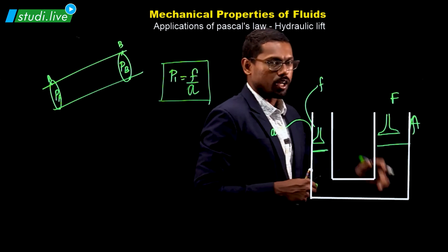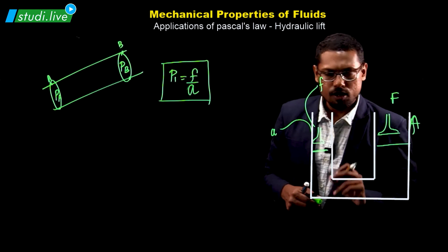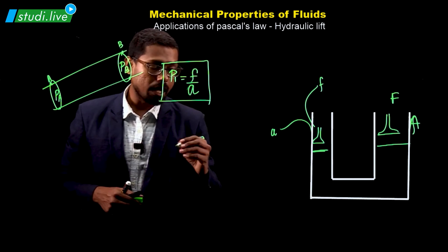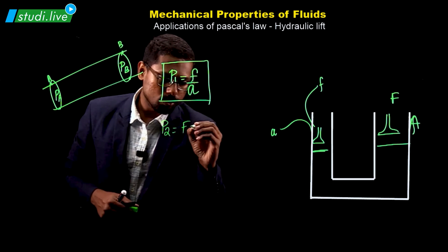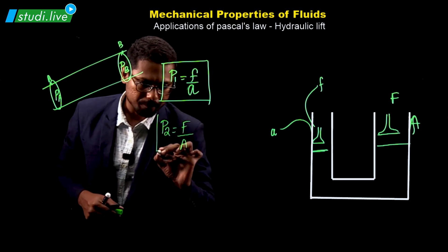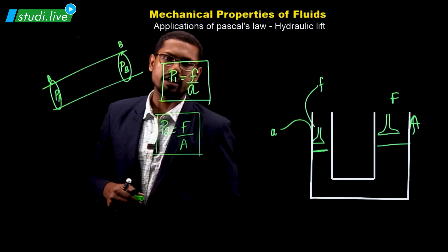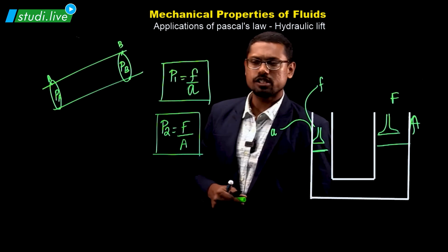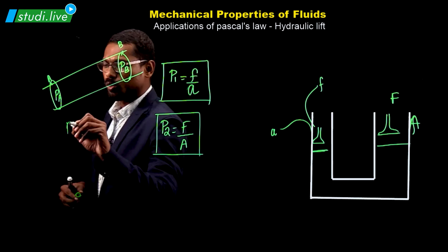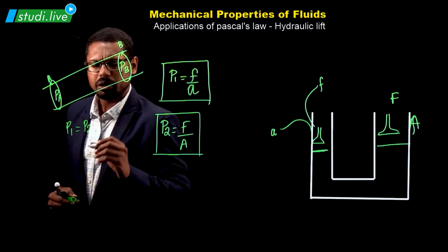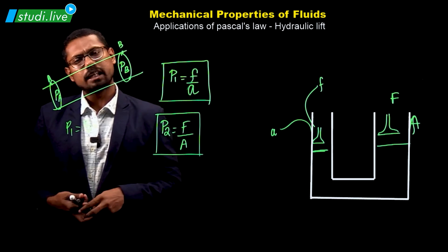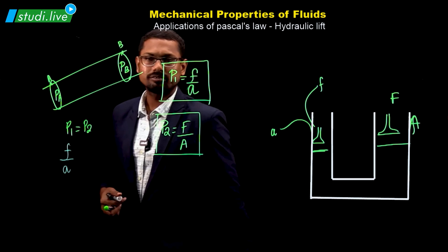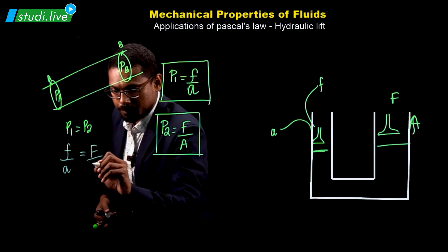For the second larger arm, the pressure P2 is equal to capital F divided by capital A. By Pascal's law, the pressure remains the same throughout, so P1 equals P2. That means f divided by a equals F divided by A.